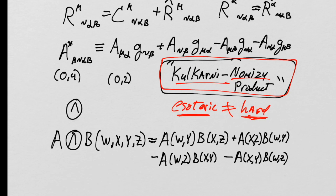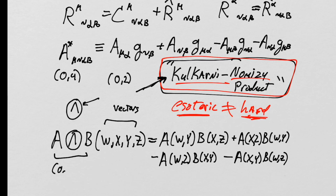In coordinate-free notation, this is the definition of the Kulkarni-Nomizu product. The symbol is like the wedge symbol from our material about differential forms, but with a circle around it. This object is a (0,4) tensor because it gobbles up four vectors. A and B must both be (0,2) tensors. The Kulkarni-Nomizu product takes two (0,2) tensors and produces a (0,4) tensor.